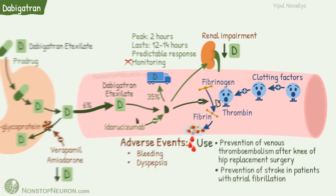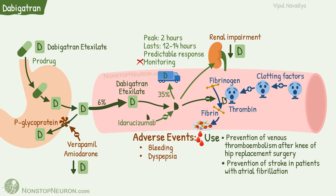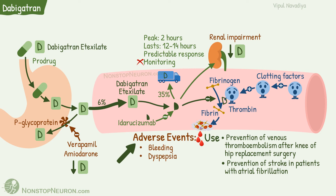This is all about dabigatran. Let's quickly revise some important points. Dabigatran is an oral direct thrombin inhibitor that prevents clot formation. It is used for prevention of venous thromboembolism after knee or hip replacement surgery, and for prevention of embolism and stroke in patients with atrial fibrillation. The most important adverse event is bleeding, which can be reversed by idarucizumab. Monitoring of therapy is usually not required.